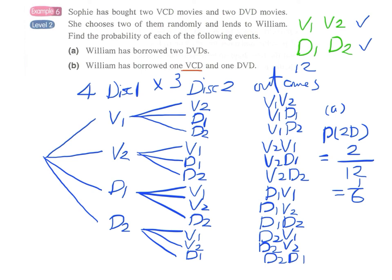And for part B, William borrowed one VCD and one DVD. If we mark all the favorable outcomes which have one VCD and one DVD we have one, two, three, four, five, six, seven, eight. One V one D, eight over twelve therefore this will be 2 over 3.